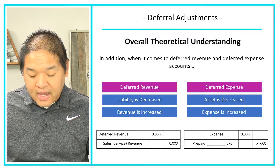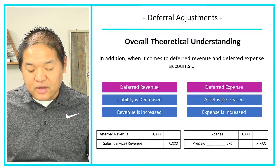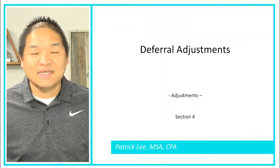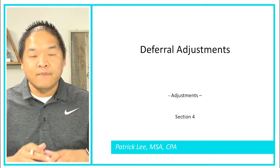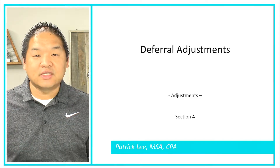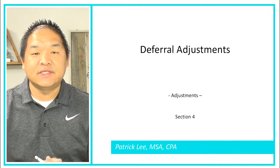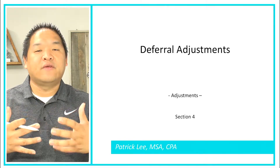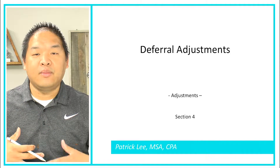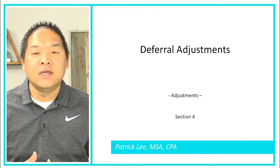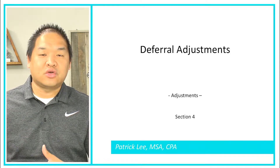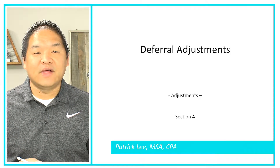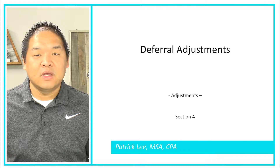Those are the adjustments we would make on either the deferred revenue or deferred expense side — that's a look at deferral adjustments. In the next couple of lessons we're actually going to do some examples so you can move beyond the theoretical standpoint. You need to know what's going on in order to actually do the journal entry, and that's what we'll be looking at in the next couple of lessons.